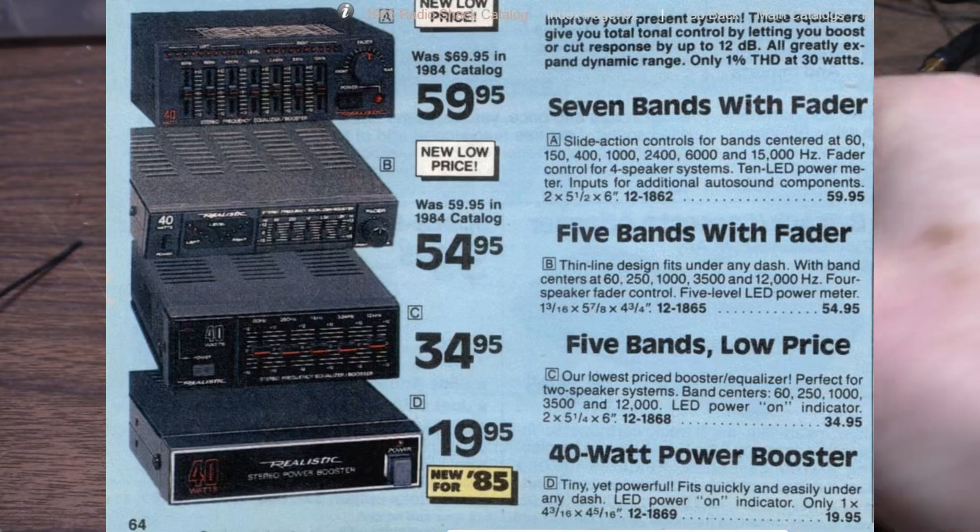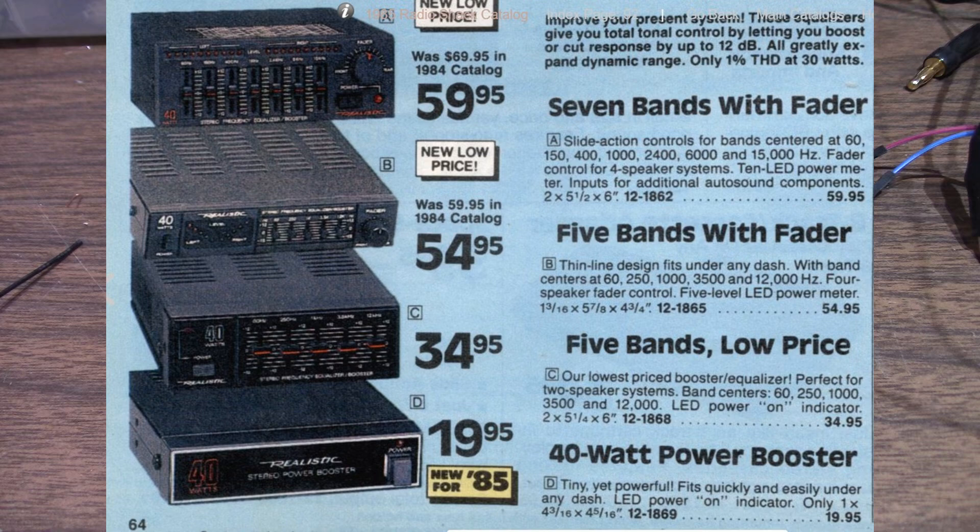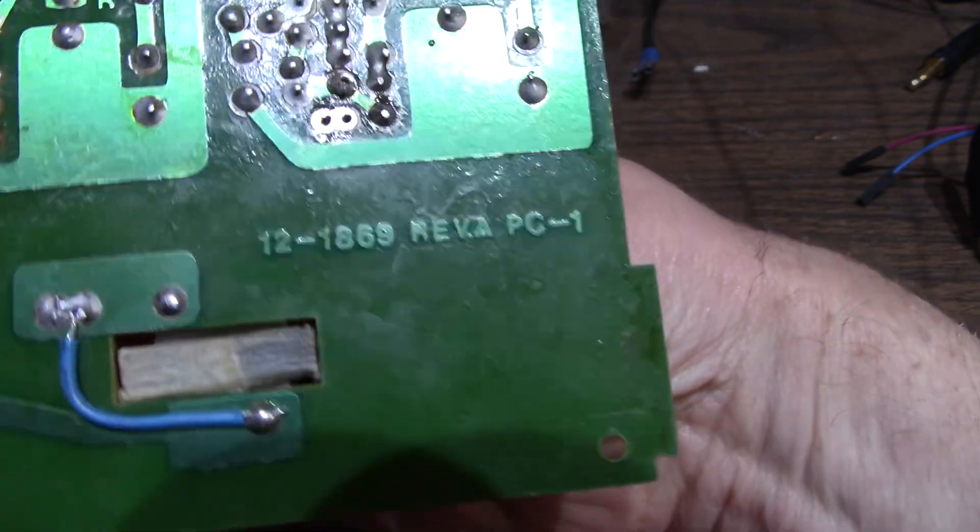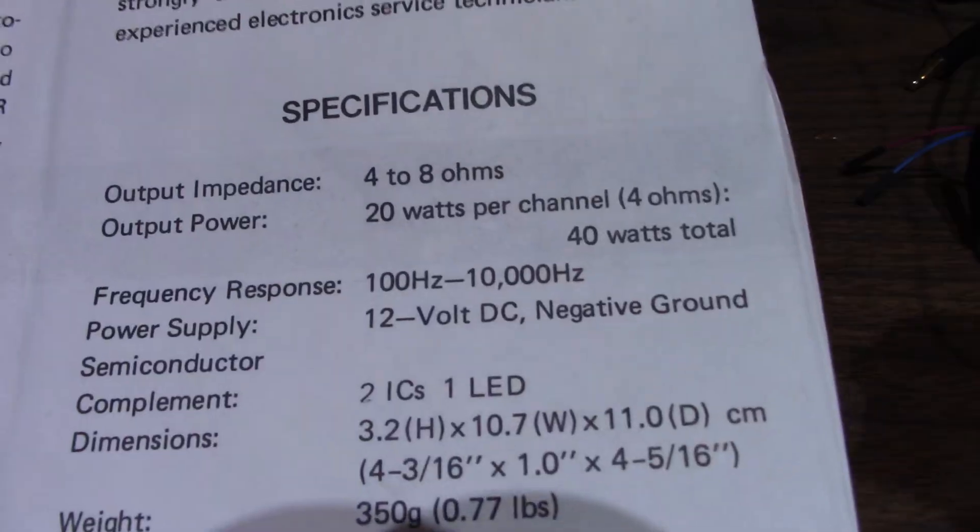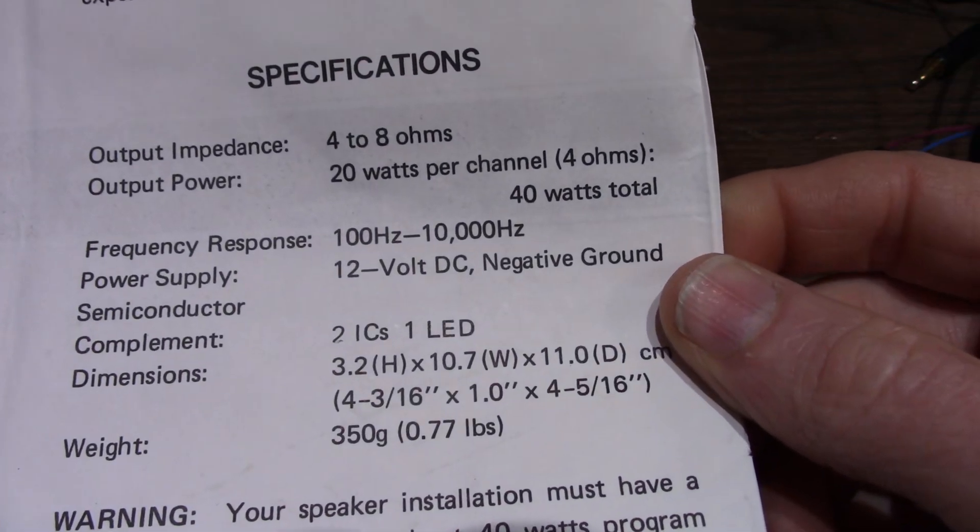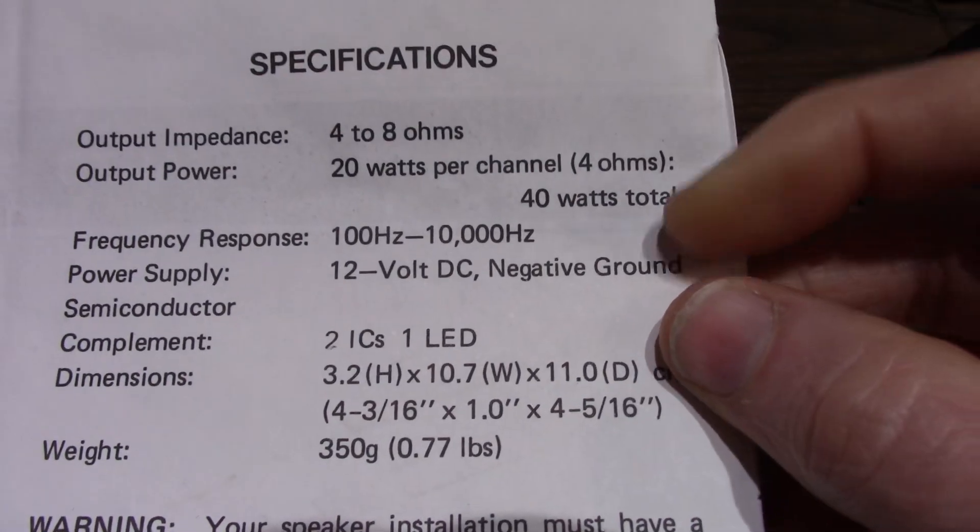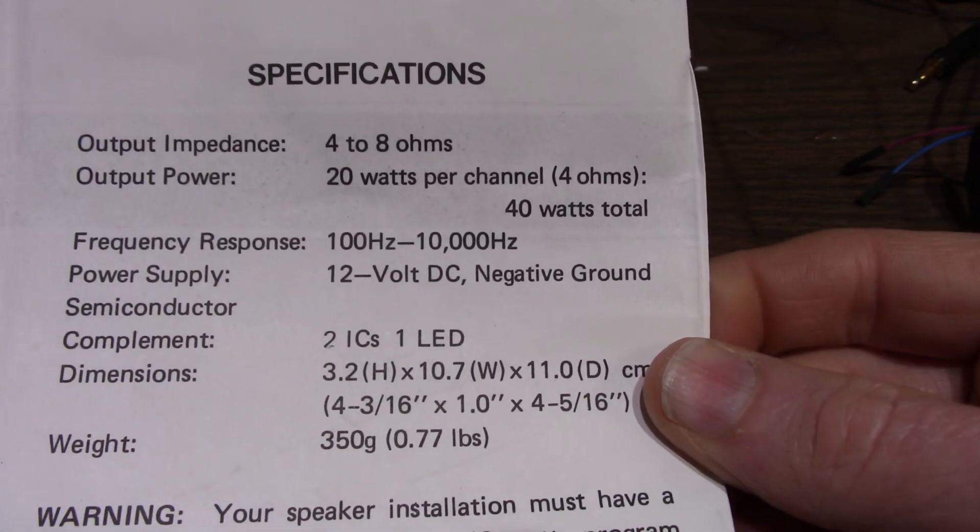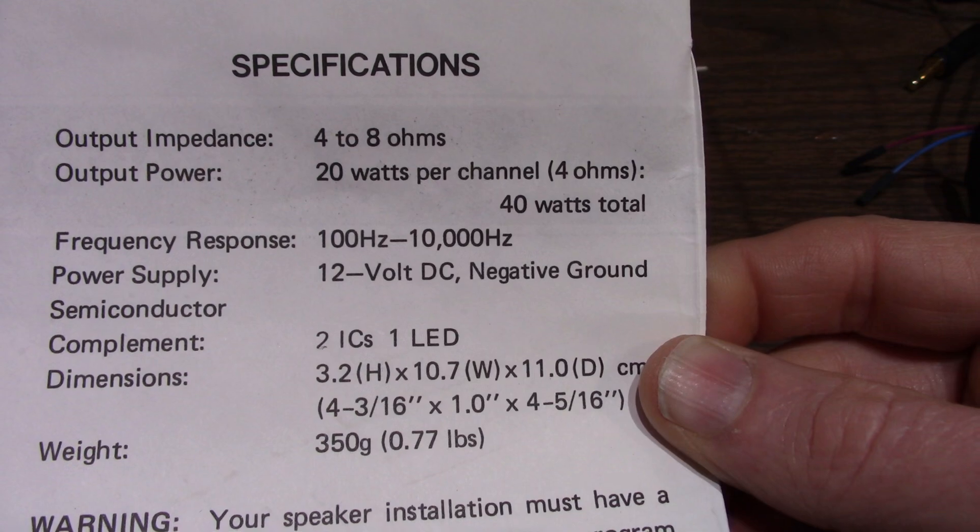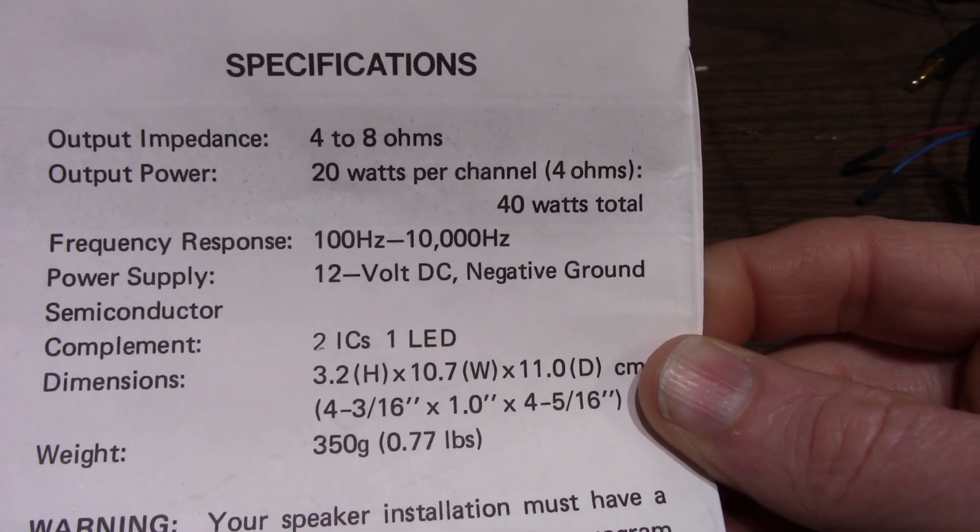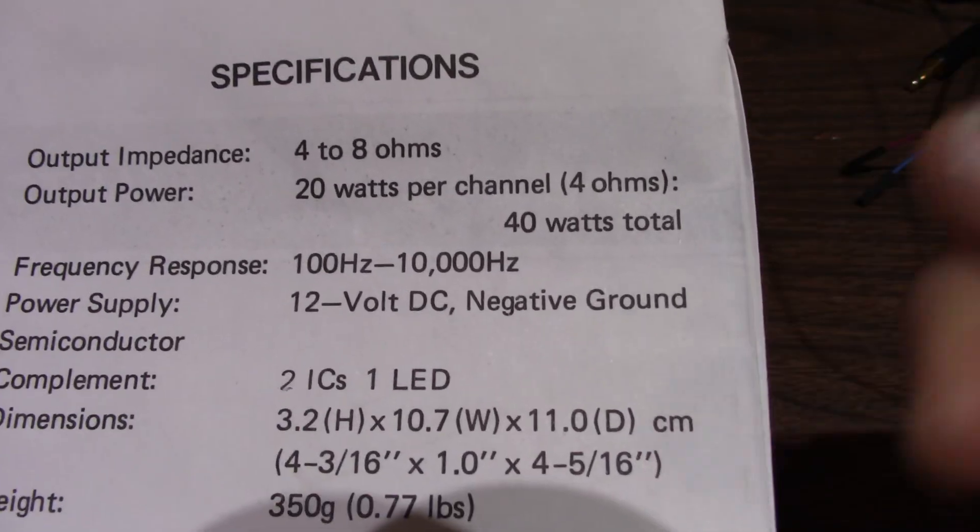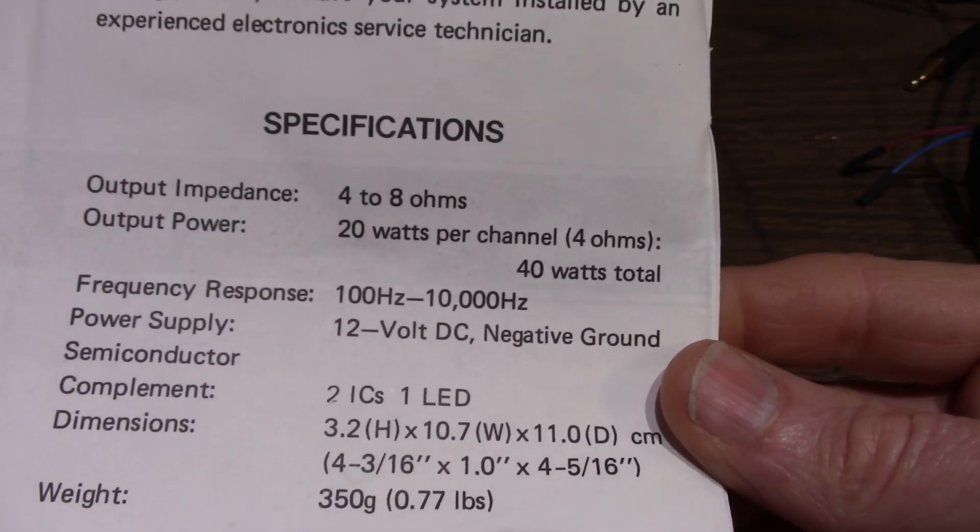Now this particular model is the bottom one in the picture there for a whopping 20 bucks. You can see the catalog number and that's the catalog number here on the unit. I have the owner's manual here. Here's the specifications. 20 watts per channel, 4 ohms, 40 total. So they're measuring this at 10%. I know Radio Shack didn't get into that deal where they said it was like 200 watts per channel like some of the other brands. I remember there was a Pyramid one with the built-in equalizer and it claimed 200 watts per channel. And you hook it up and measure the power and it was just the same as something like this.